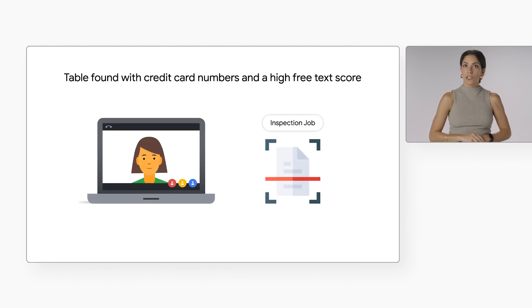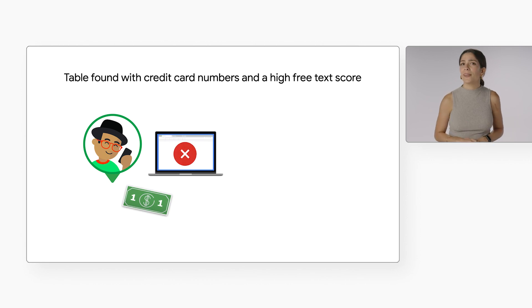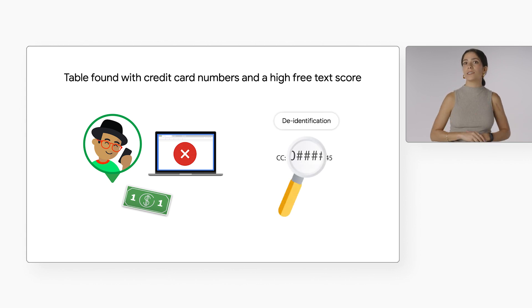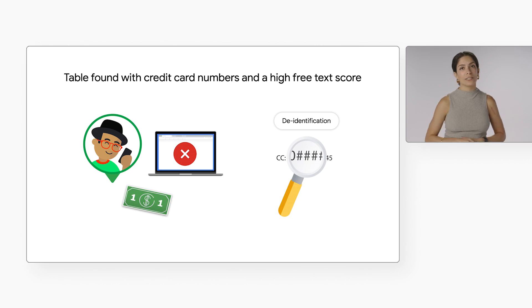You flag it to your manager and suggest running a deep scan to investigate further and pinpoint where the sensitive data is. It turns out that some customers have been adding their payment information into a field that was not designed to store sensitive data. The notes and comments are very useful, but you don't want the raw PII visible, so you decide to obfuscate PII through DLP's de-identification service. Now your new manager is impressed, your company's data is protected, and your overall data risk is lowered. You can learn more about deep scans and de-identification with the Getting Started with DLP series.